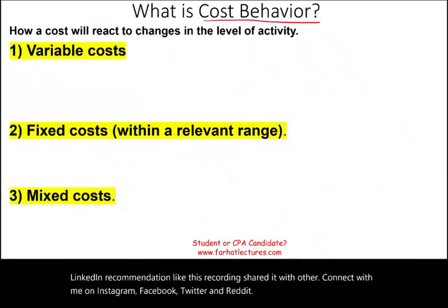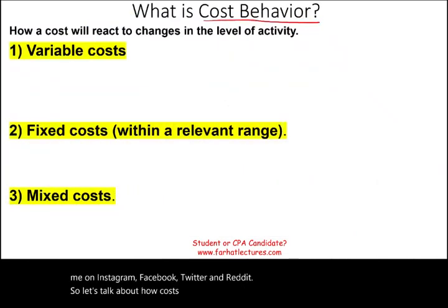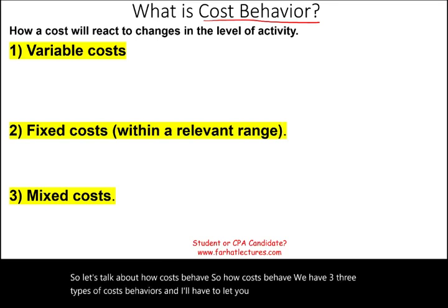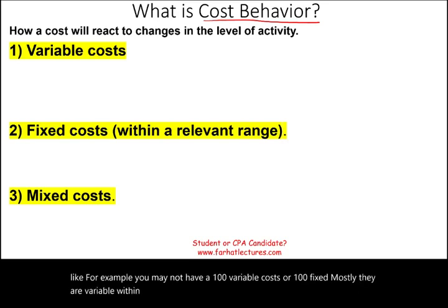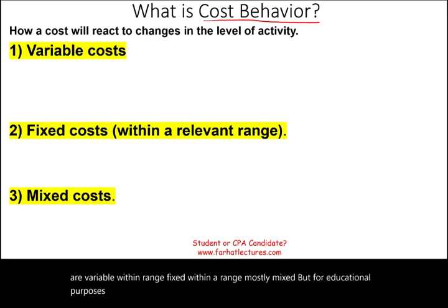So let's talk about how costs behave. We have three types of cost behaviors. In the real world, you may not have a 100% variable cost or 100% fixed cost — mostly they are variable within a range, fixed within a range, mostly mixed. But for educational purposes, we're going to assume that a certain cost is a variable cost.